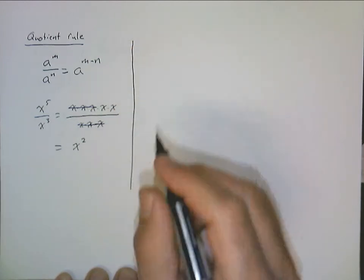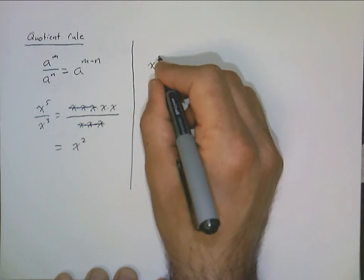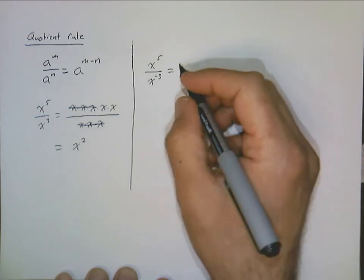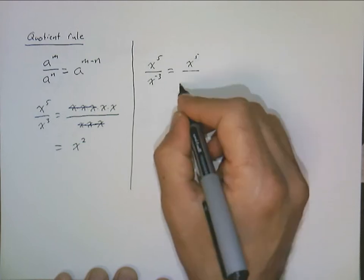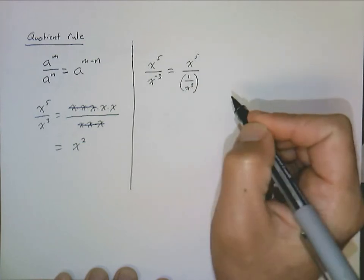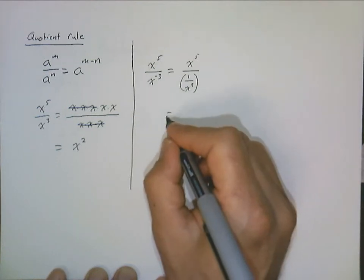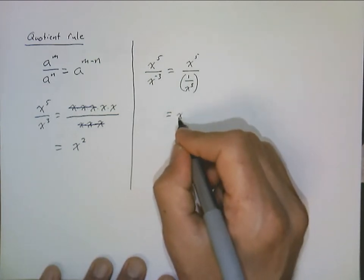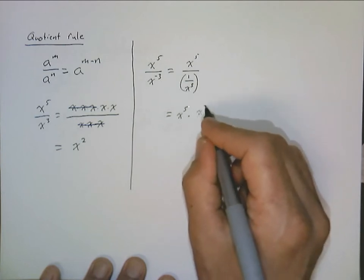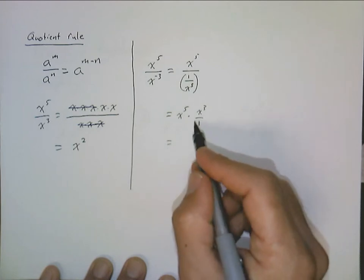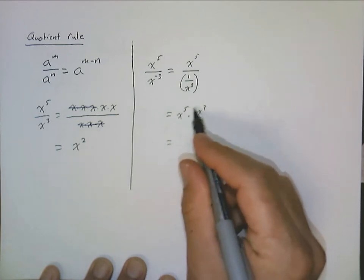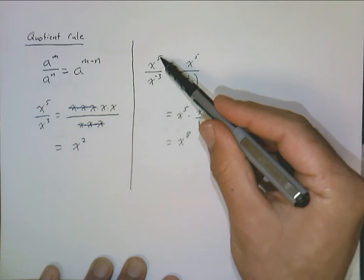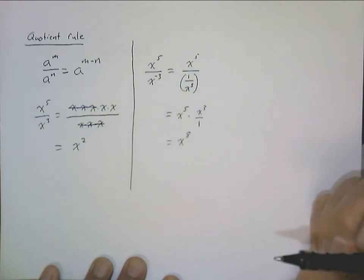This also works with negative exponents. Take x to the fifth over x to the negative 3. That's x to the fifth over 1 over x cubed — using the definition of a negative exponent — which is the same as multiplying by the reciprocal: x to the fifth times x cubed, and by the product rule that's x to the eighth. And five minus negative three is, of course, positive eight.